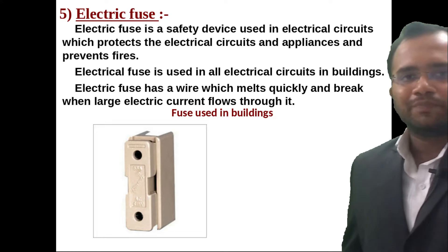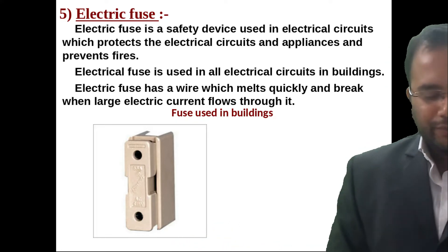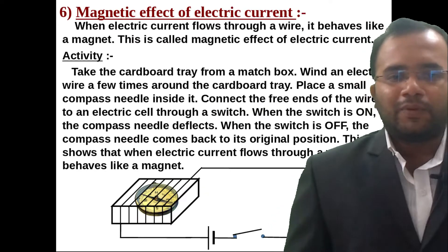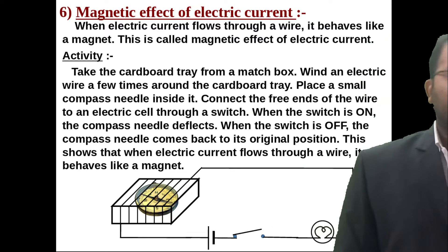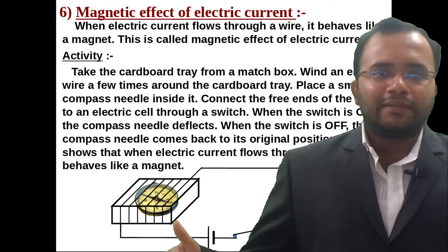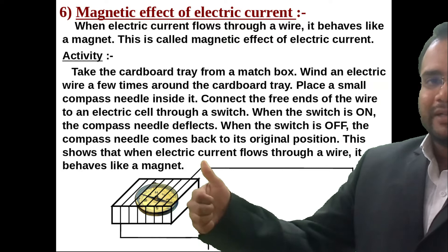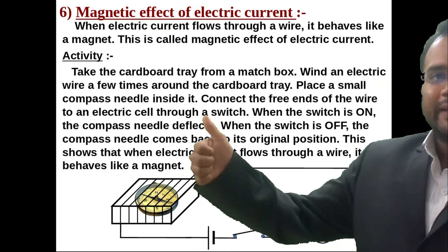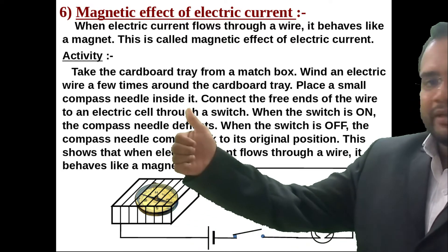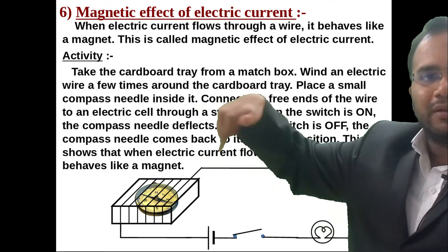The diagram shows the concept of the electric fuse. Next is the magnetic effect of electric current. We know the right-hand thumb rule: the thumb indicates the direction of current in the conductor, and the curled fingers indicate the magnetic flux around the conductor.